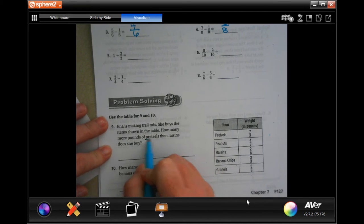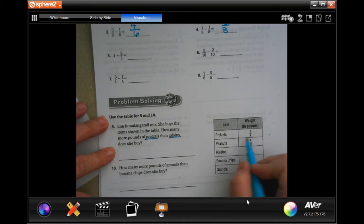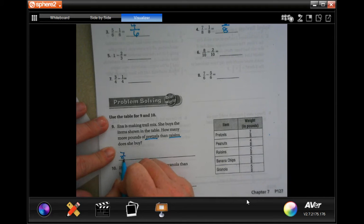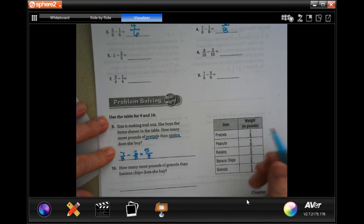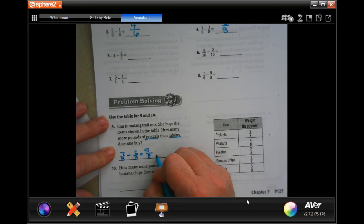So, how many more pounds of pretzels than raisins? Pretzels is 7/8. I'm going to take away the 2/8 of the raisins. Denominator stays the same. And 7 minus 2 is 5.